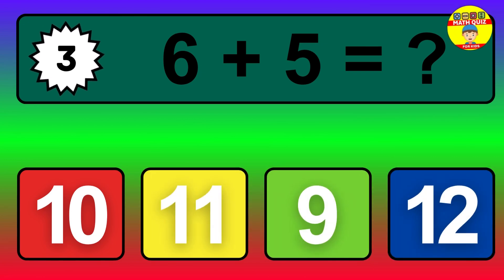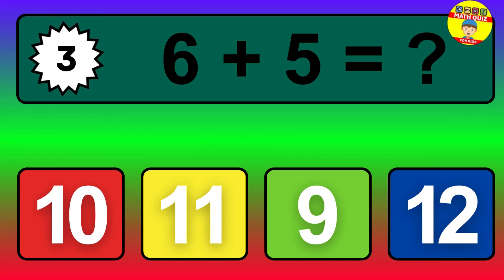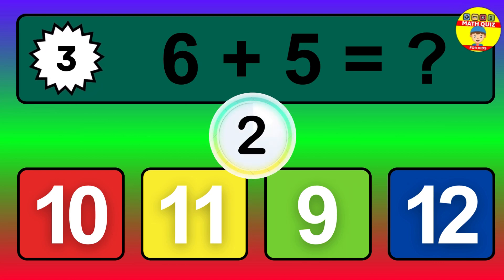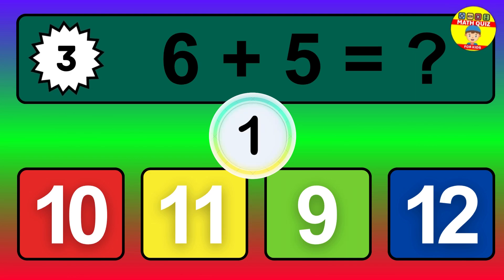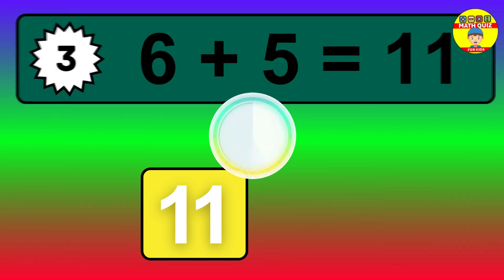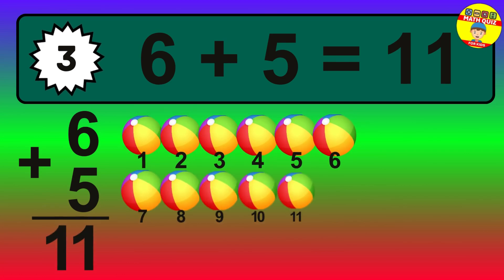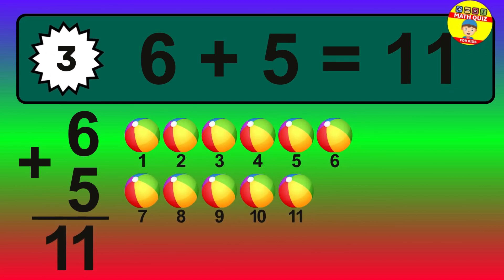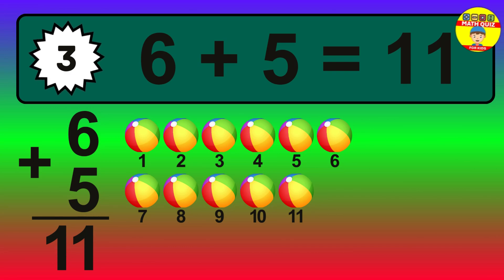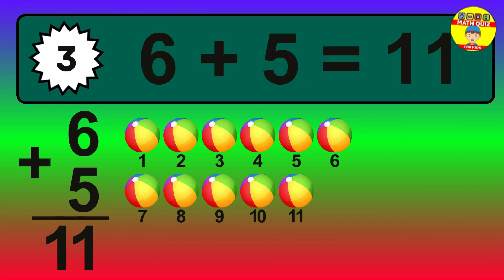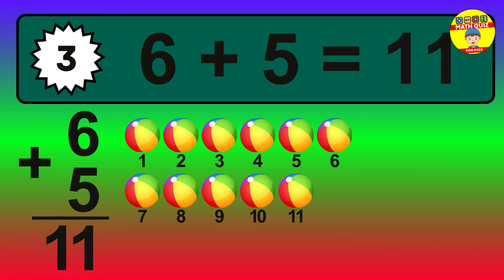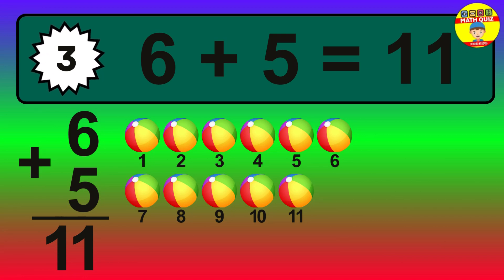Question 3. 6 plus 5 equals what? The answer is 6 plus 5 is 11. Let's count it: 1, 2, 3, 4, 5, 6, 7, 8, 9, 10, 11.